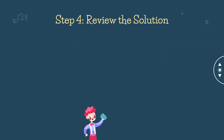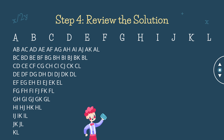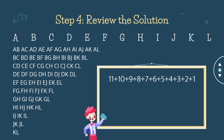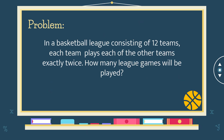The last step is to review the solution. We can check our work by having the 12 teams represented by letters A, B, C, D, E, F, G, H, I, J, K, and L. With these letters, we make an organized list of all the possible outcomes. Per row, there is a specific number of games: 11, 10, 9, 8, 7, 6, 5, 4, 3, 2, and 1, totaling 66 games. Since each team plays each other team twice, we multiply 66 by 2, which equals 132 games. Since our problem is a word problem, our final answer in sentence form is: 132 games will be played.